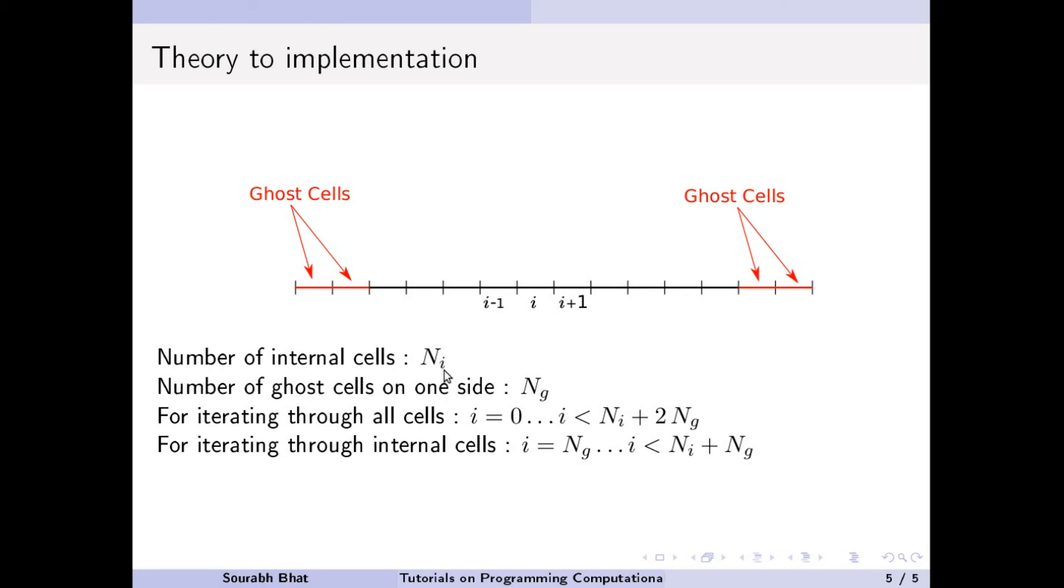But let us briefly look at what happens to the boundary conditions. So the number of internal cells, if I say they are equal to Ni. So for example, in this case, I have 1, 2, 3, 4, 5, 6, 7, 8, 9, and 10. So I have 10 cells here. So Ni is going to be 10 in this particular case. The number of ghost cells is ng. In this particular case, it is 2.